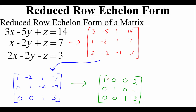So in this matrix, since the one is in the first column — that's our x column — this top row is telling us that x equals two. The middle row, since the one is in the middle column, that was our y column, is telling us that our y value is negative one. And then this last row, since the one is in the third column — that was our z column — is telling us that z is equal to three.